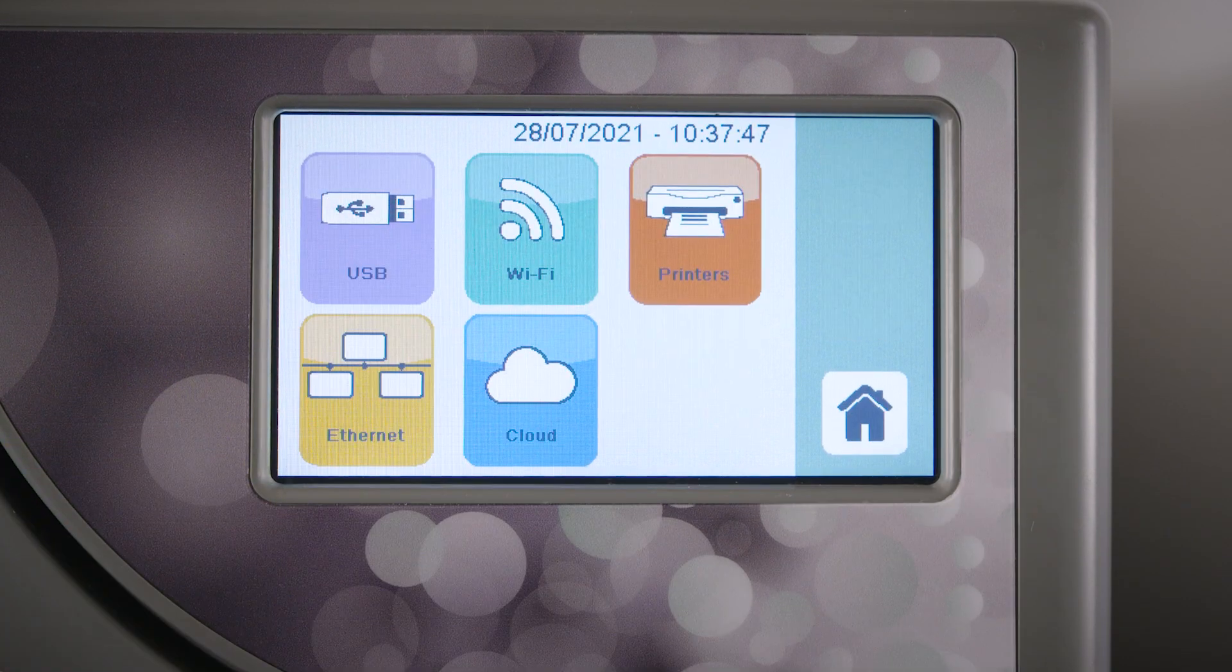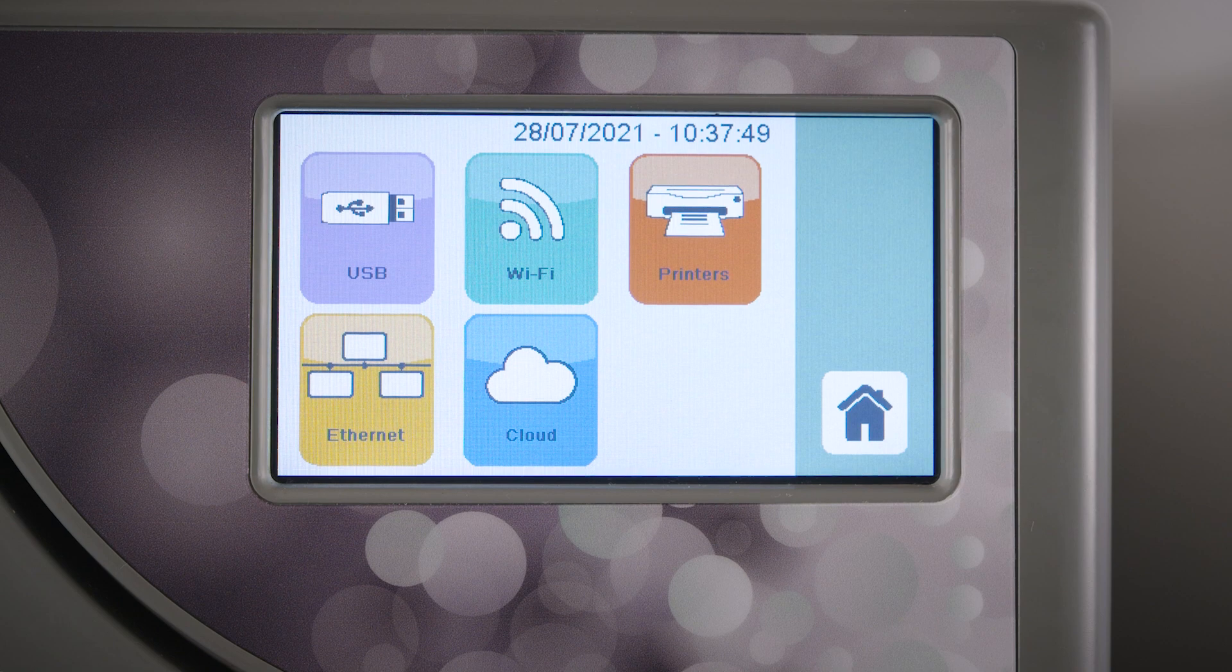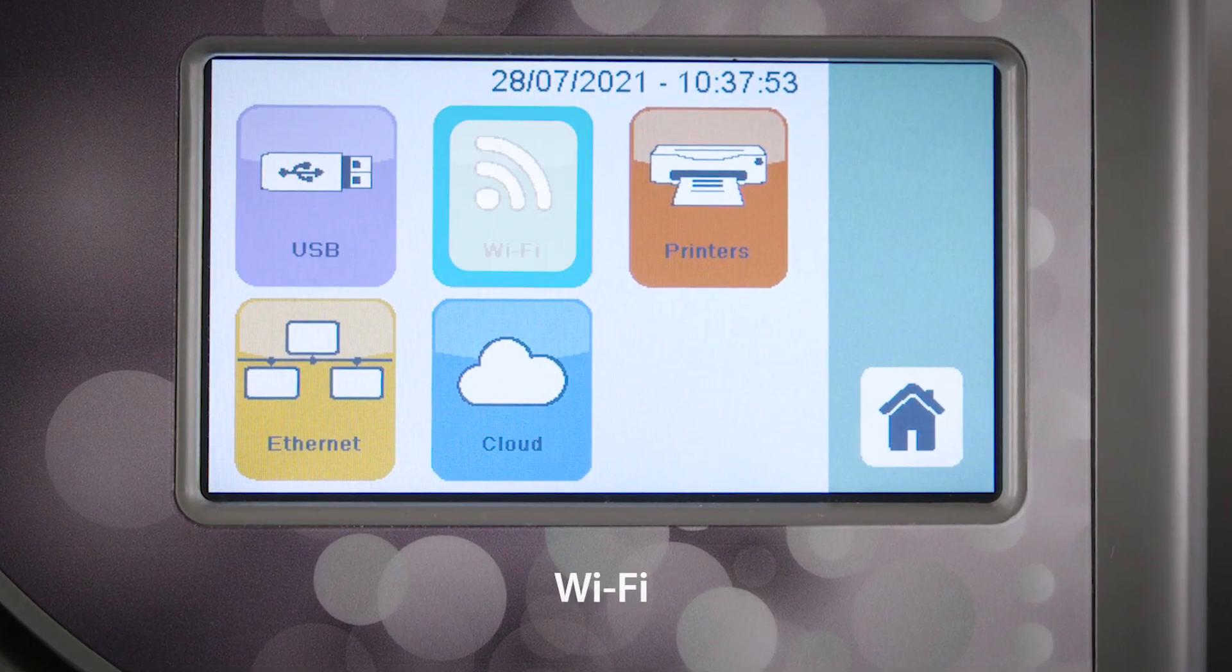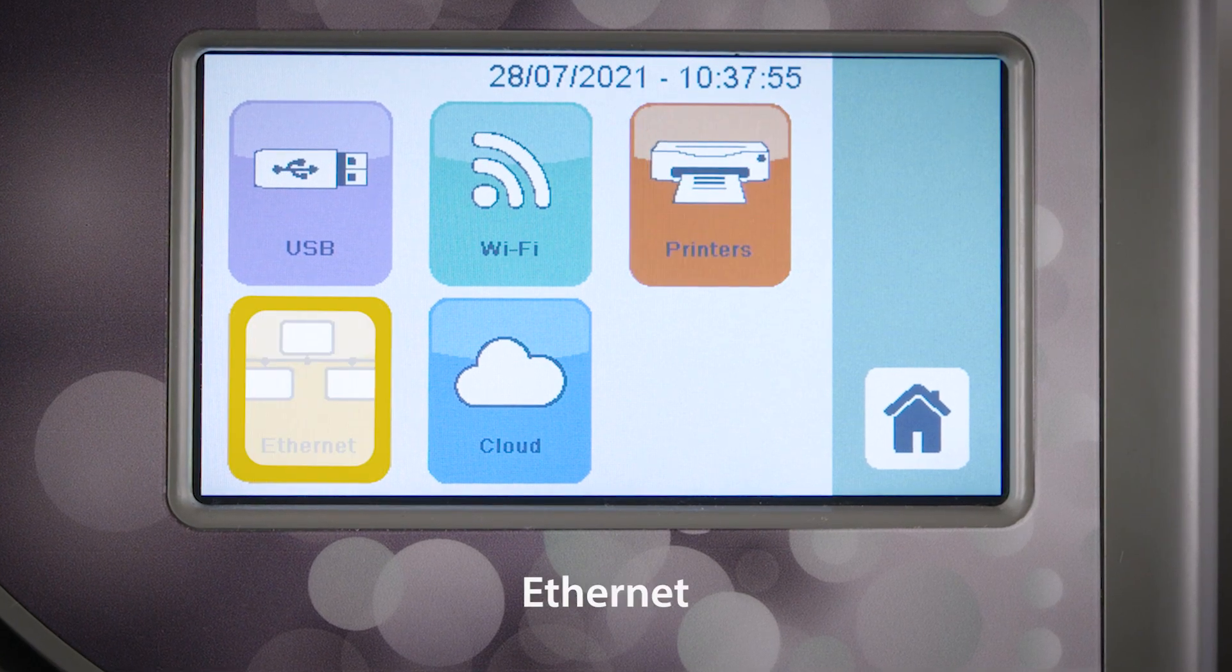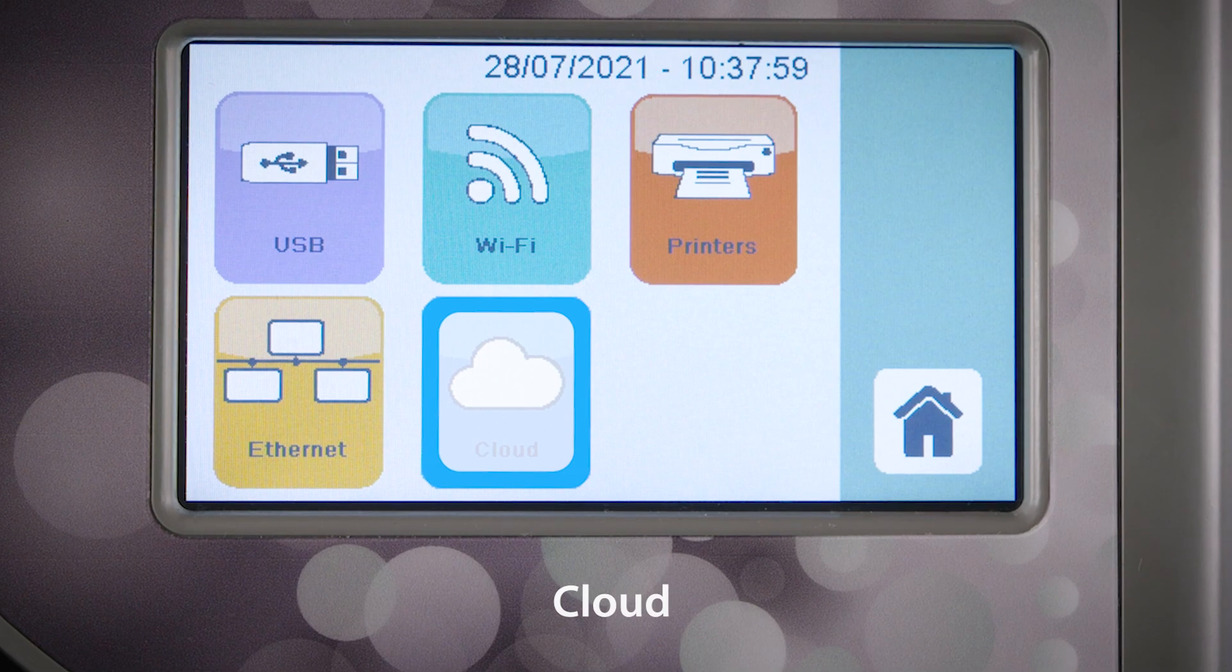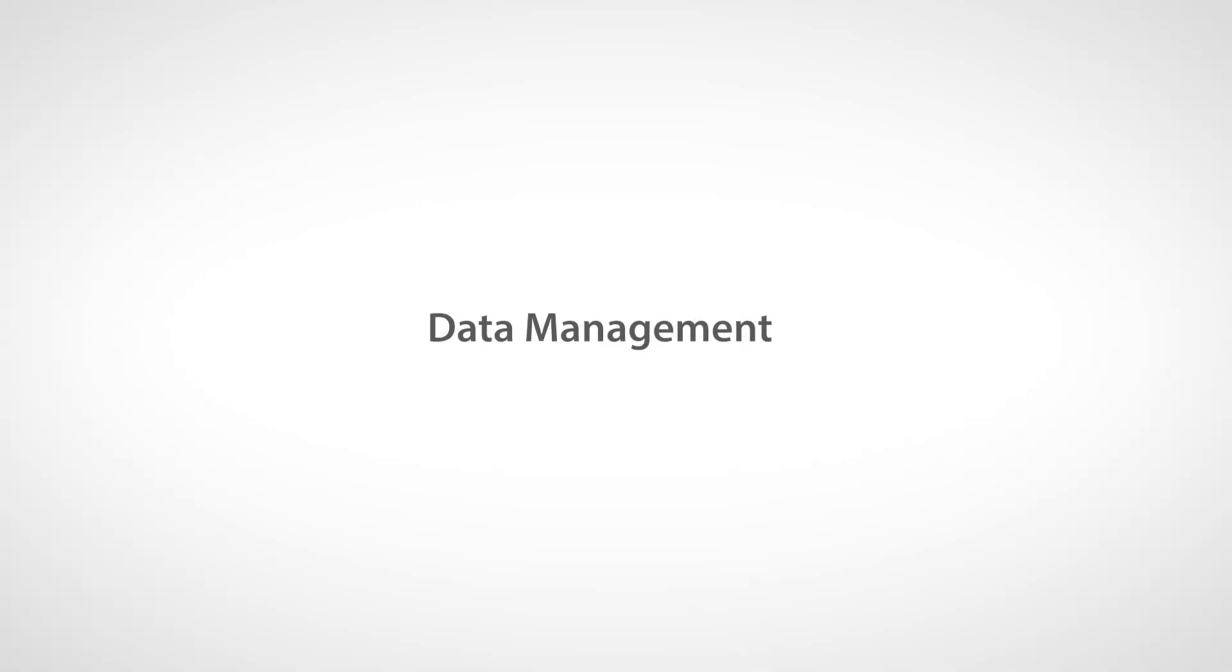Select the Data Management icon to set how you would like the unit to log cycle data, with the option of USB, Wi-Fi, Printer, Ethernet, and Cloud icons. Select the icon that best suits your data logging needs. All cycle data stored in the internal memory of the sterilizer should be transferred onto the USB.